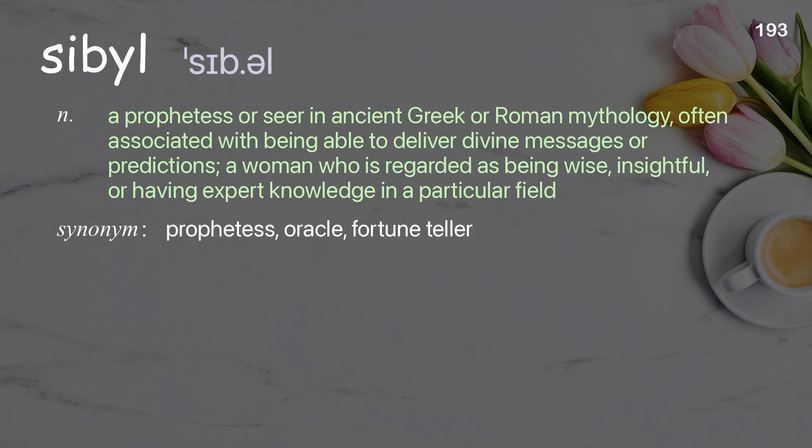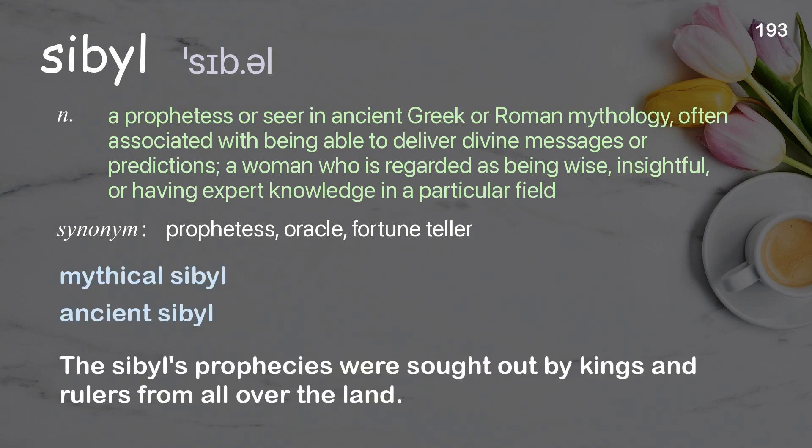Sibyl: a prophetess or seer in ancient Greek or Roman mythology, often associated with being able to deliver divine messages or predictions; a woman regarded as being wise, insightful, or having expert knowledge in a particular field. Examples: mythical sibyl, ancient sibyl. The sibyl's prophecies were sought out by kings and rulers from all over the land.